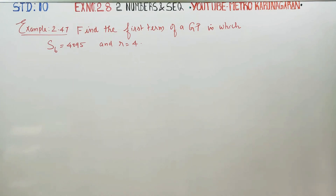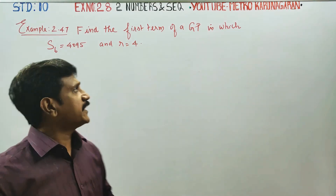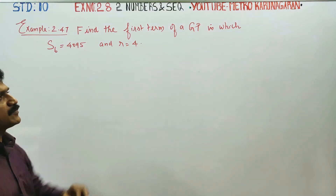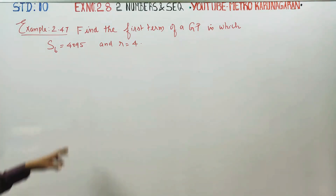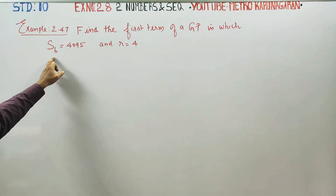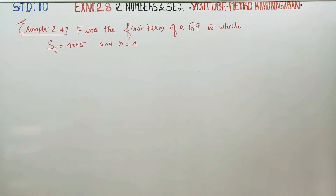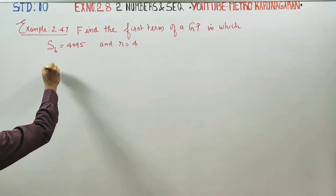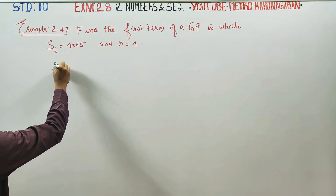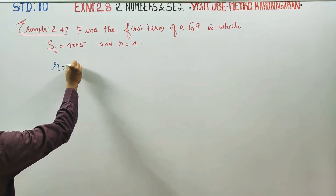Dear 10th standard students, I am Metro Karanagaran. In example 2.47, find the first term of the GP in which S6 is 4095 and R is equal to 4.